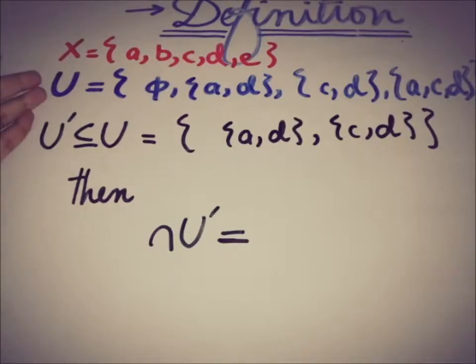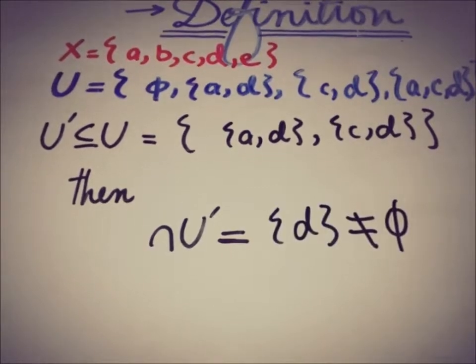So there is a collection u of the subset of x and a finite subcollection of u that contains a, d, and c, d. And then if we take the intersection of this set, the u prime, then we'll get d here and that is non-empty. So this is just a very easy example to show what is the finite intersection property if we take a finite topological space.